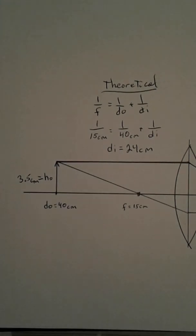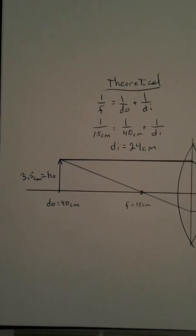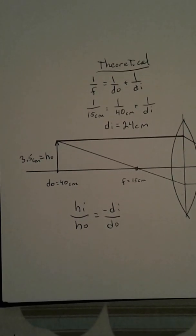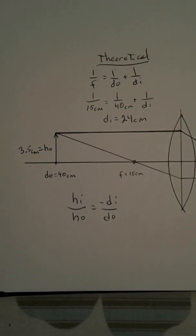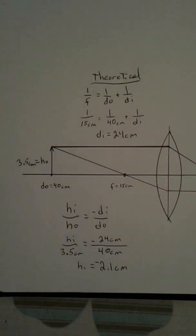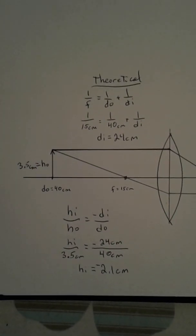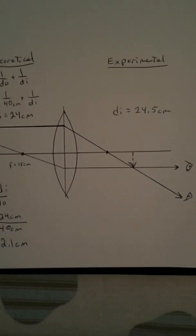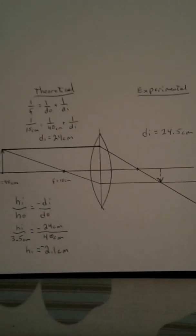On my light bulb, I measure the height of the object to be about 3.5 centimeters. We can use the height formula to calculate the height of the image. I get a height of negative 2.1 centimeters. Now on the diagram, it is smaller. Let's see how it looks like in real life.